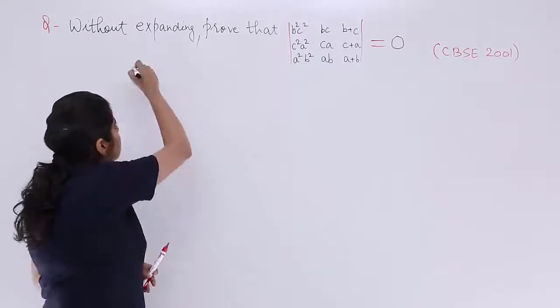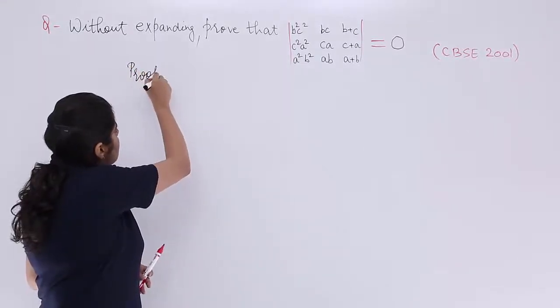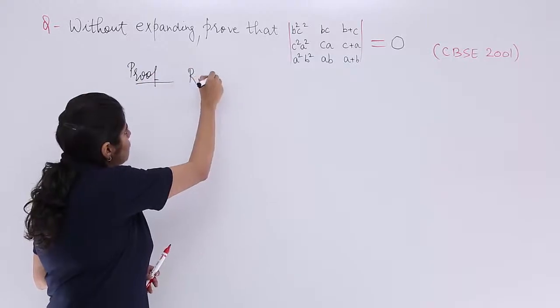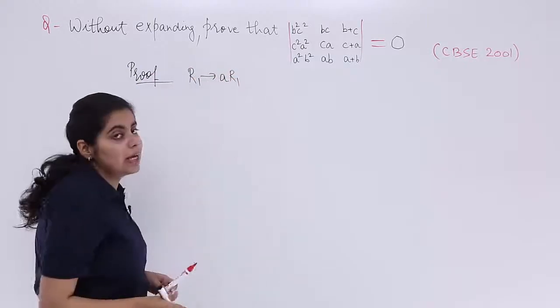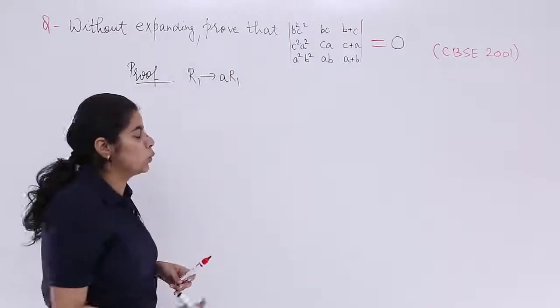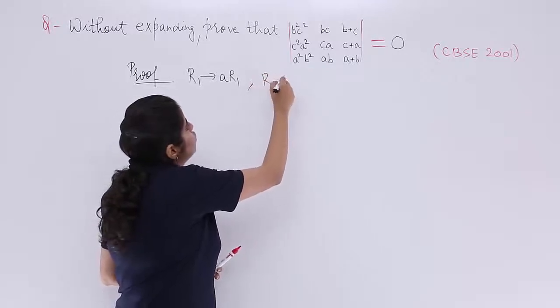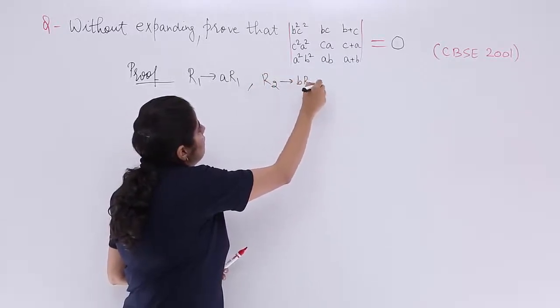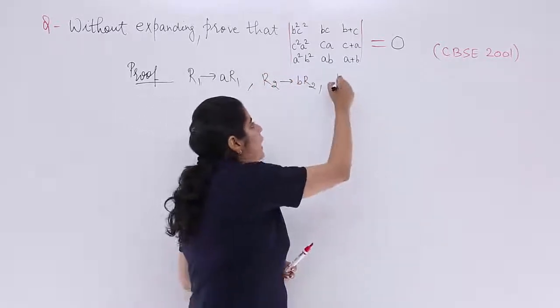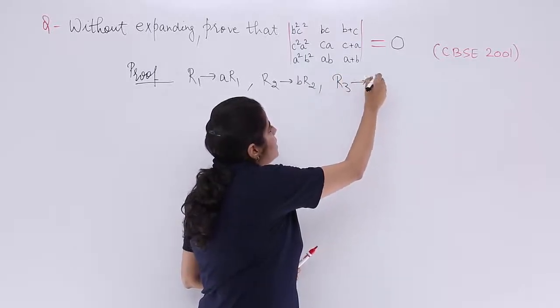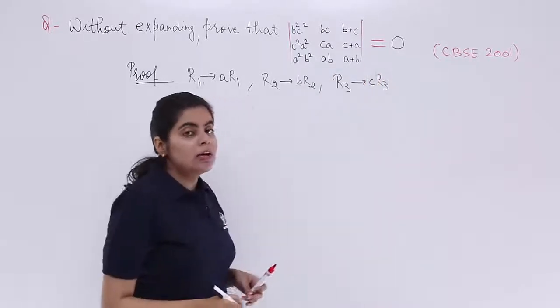So first thing that comes to my mind in the proof is why not apply the operation that you need to multiply row 1 by A because there is no A, row 2 by B since there is no B and row 3 by C.